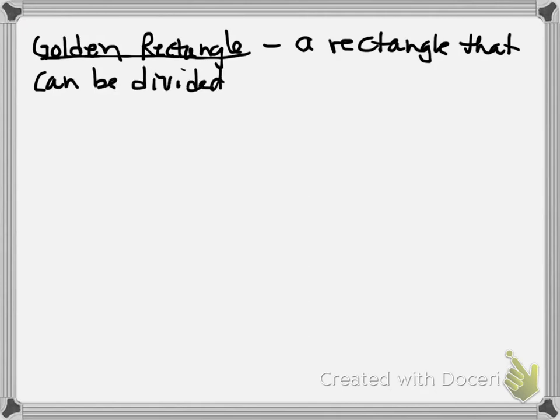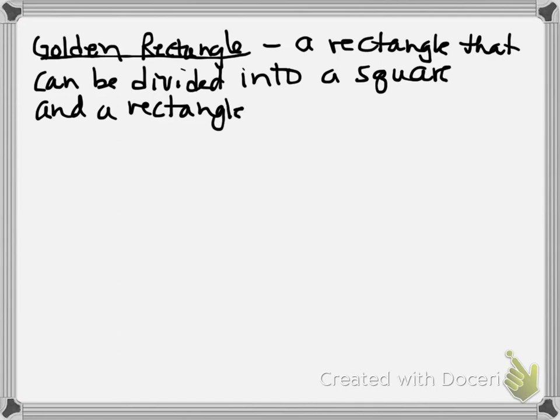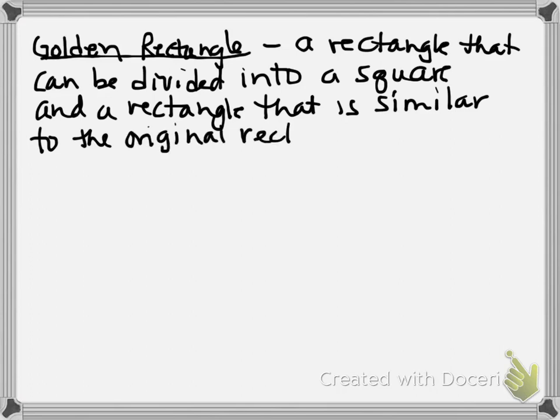A golden rectangle is a rectangle that can be divided into a square and a rectangle that is similar to the original rectangle.